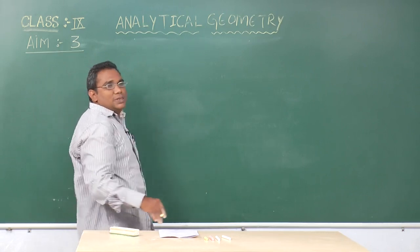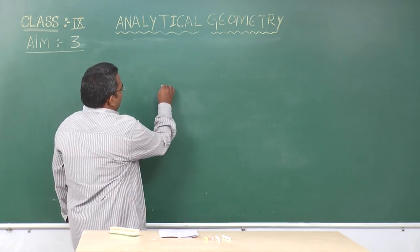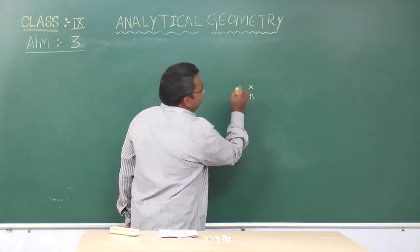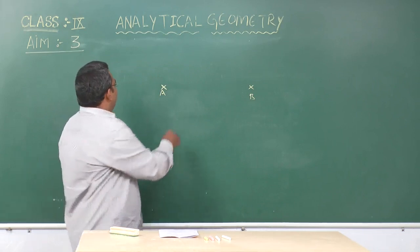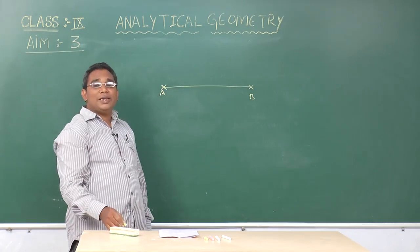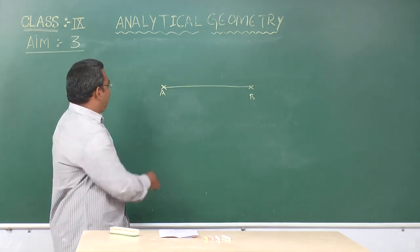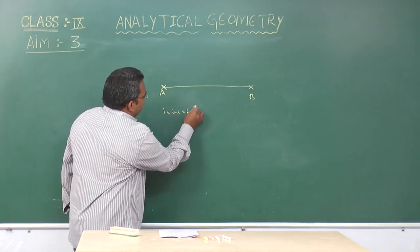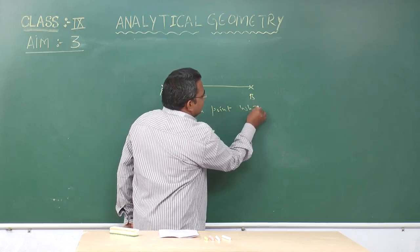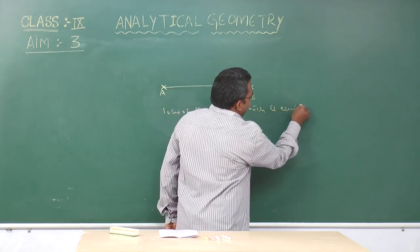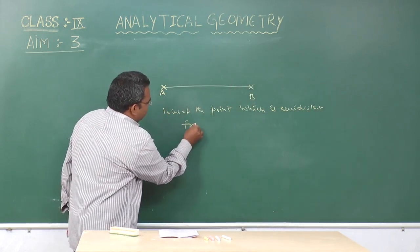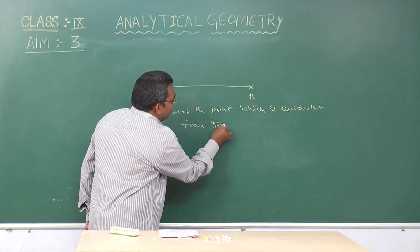One more concept: in the locus, suppose A and B are any two fixed points. We have to find the locus of the point which is equidistant from the given points A and B.